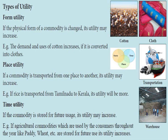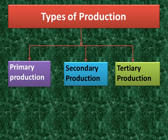Now we will see the types of production. For general purposes, it is necessary to classify production into three main groups. They are primary — P-R-I-M-A-R-Y — secondary — S-E-C-O-N-D-A-R-Y — and tertiary — T-E-R-T-I-A-R-Y — production.